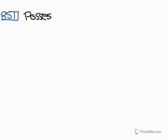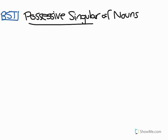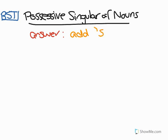Hi, I'm a Bullis student tutor, and in this video I'm going to be talking about the possessive singular of nouns. How to make a singular noun possessive. The answer to this question, quite simply, is to add apostrophe-s, regardless of the ending consonant of a word.